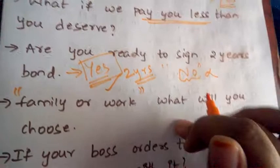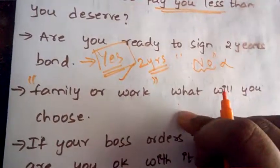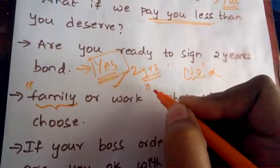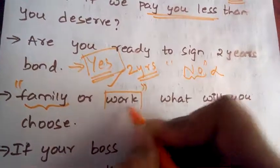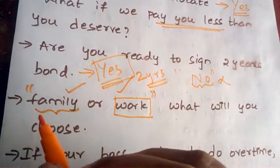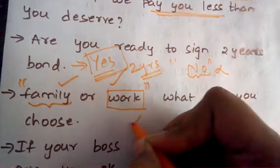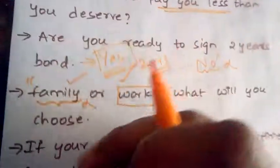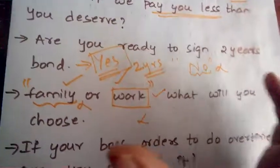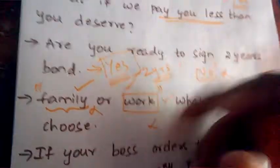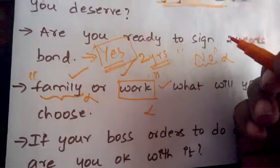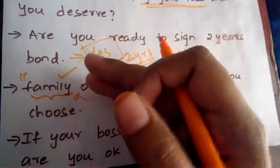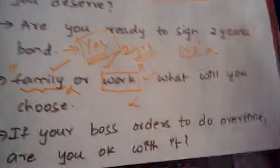The next tricky question is: 'Family or work — what will you choose?' They want to know how honest you are. If you say only family, they'll feel you won't take work seriously. If you say only work, it sounds fake. The right answer is: 'Both are equal priorities, but I give a little more priority to my family because they are the reason why I am here right now.' Give that kind of diplomatic answer.